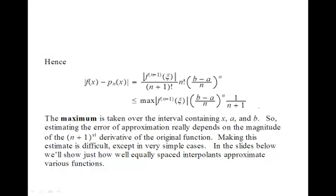So putting it all together, the estimate of the product and the other is that we have the difference between the function and the interpolant is bounded by the maximum value of the n plus first derivative times (b minus a over n) raised to the nth power divided by n plus 1. The maximum is taken over all over an interval that contains all of these points. So this means you can actually go outside the interval and still get an estimate.